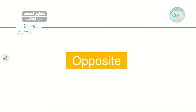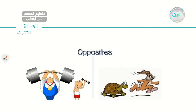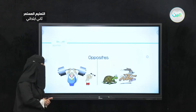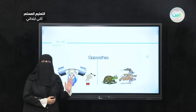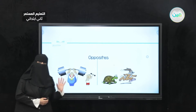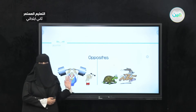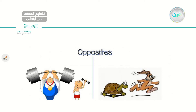In the previous lesson we talked about opposites. What do we mean by opposite? When I have two things that are not the same — they are different, completely different. For example, I have two men: one of them is very strong, and the other one is weak. Opposite. Also, I have a turtle and a rabbit. The rabbit is fast while the turtle is slow. That's what we mean by opposite — two different adjectives with opposite meaning.